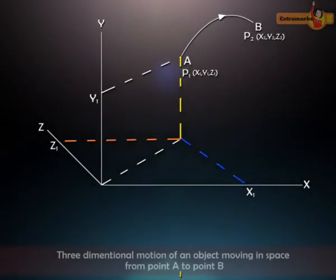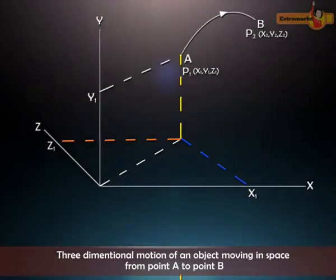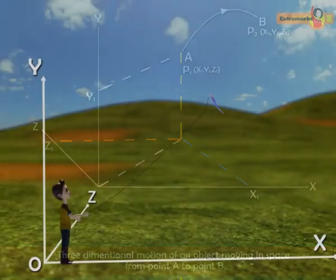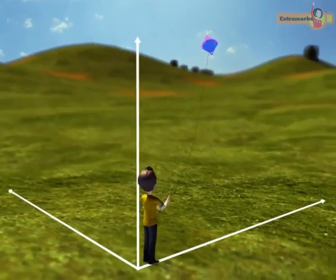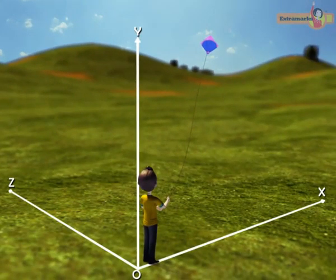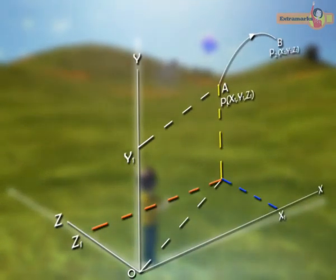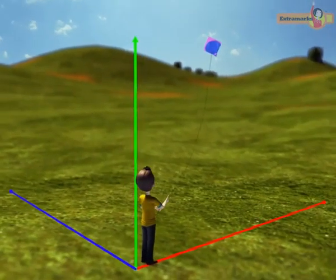A particle moving in space has three-dimensional motion. In this type of motion, all three rectangular coordinates change with time. The figure shows this type of motion where the particle moves from A to B, and the corresponding rectangular coordinates change from (x1, y1, z1) to (x2, y2, z2). A bird or kite flying in the air are examples of three-dimensional motion.